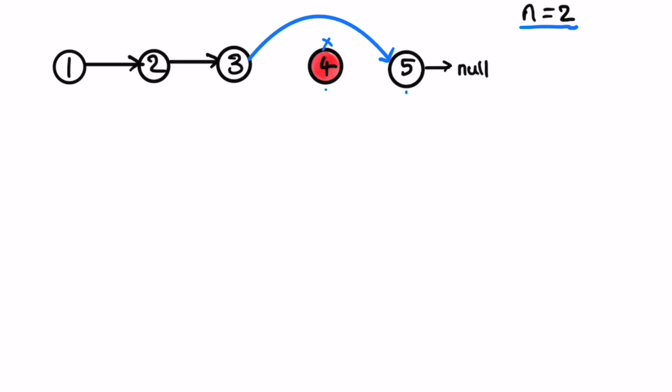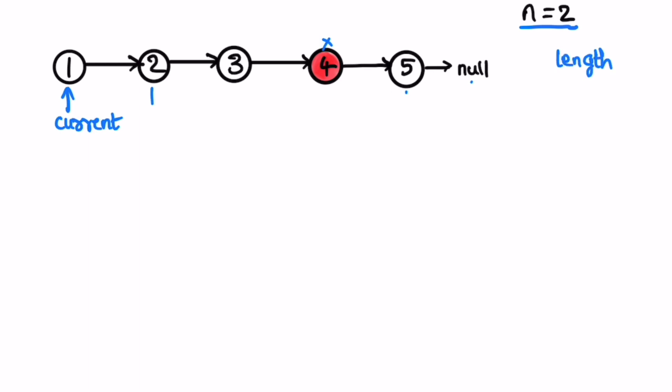We remove that connection and form a new connection — that's how we remove a node from a linked list — giving output 1, 2, 3, and 5. To find the node we need to delete, first we find the length of the linked list. We take a current pointer pointing at the head and iterate until current is not equal to null. In each iteration we increment a counter, and when we reach null we have the length.